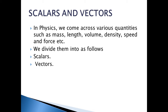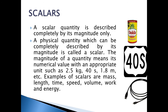Scalars and vectors: in physics we come across various quantities such as mass, length, volume, density, speed, and force. We divide them into scalars and vectors. A scalar quantity is described completely by its magnitude only. The magnitude of a quantity means its numerical value with an appropriate unit, such as 2.5 kg, 40 seconds, 1.8 meter. Examples of scalars are mass, length, time, speed, volume, work, and energy. In the picture you can see examples of scalars which have only quantity and unit — no direction is present in scalar quantities.